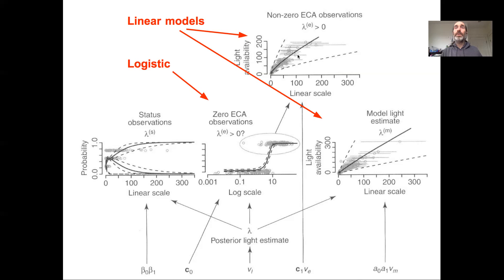So essentially giving us a zero-inflated log-log regression model and really accounting for the fact that if you don't see a tree in the remote sensing imagery, it probably has a pretty low light level because it's probably in the understory.